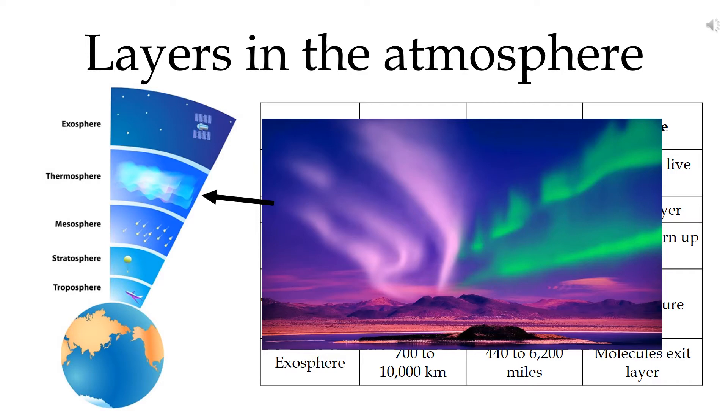The ionosphere is a region of the atmosphere that is ionized by solar radiation and this is where the aurora borealis is.